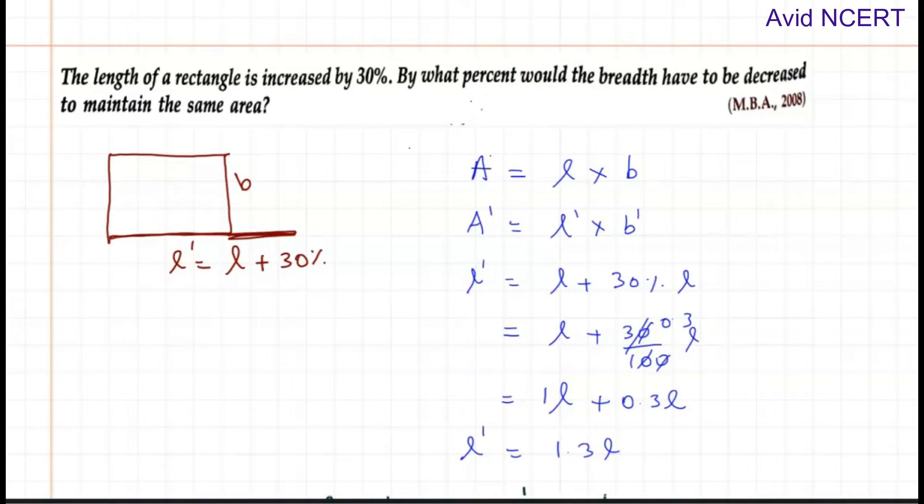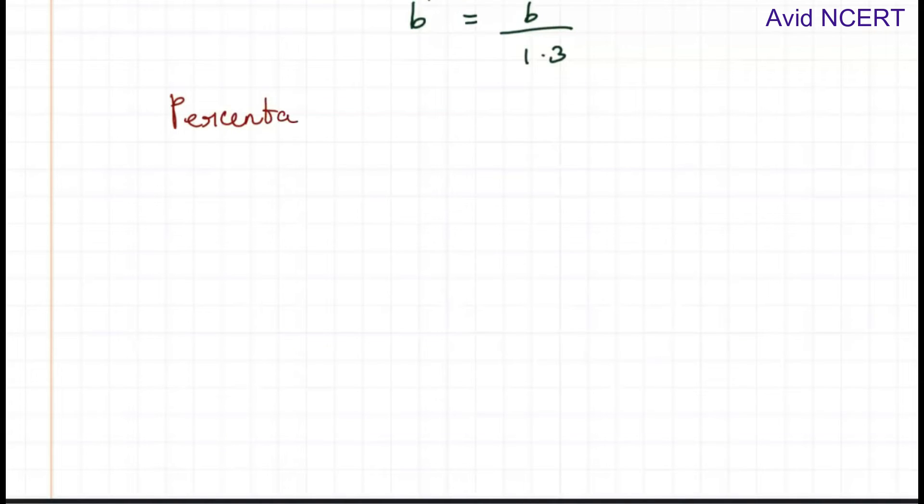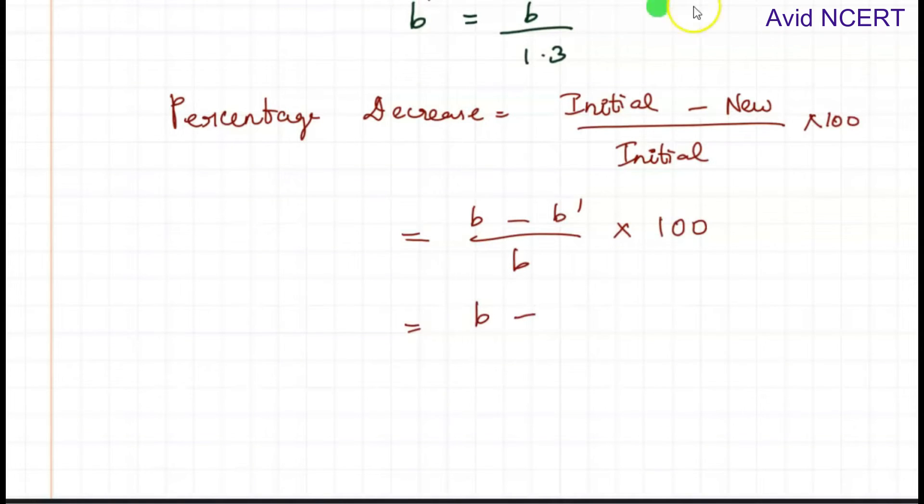The initial value of the breadth is b, and the new value is b dash. So it's b minus b dash divided by b times 100. We found that b dash equals b/1.3, so substituting that: b minus b/1.3 divided by b times 100.